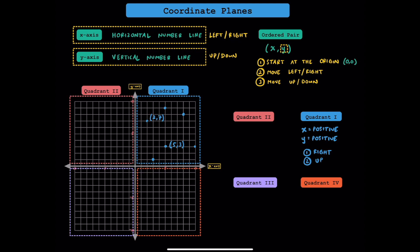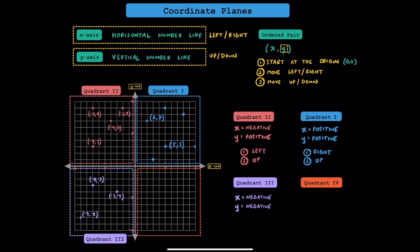Now let's talk about quadrant 2. In quadrant 2, x is always negative and y is always positive. Notice how all these ordered pairs in quadrant 2 have a negative x value and a positive y value. To get to quadrant 2, you'll always move to the left and move up. Now let's take a look at quadrant 3. Notice how all the coordinates in quadrant 3 will have a negative x value and a negative y value. To get to quadrant 3, you'll always move to the left and then move down.